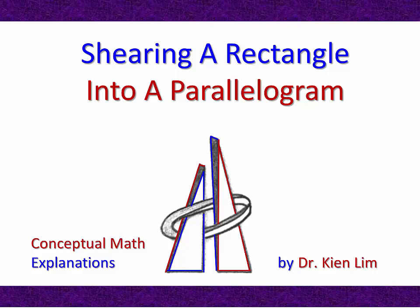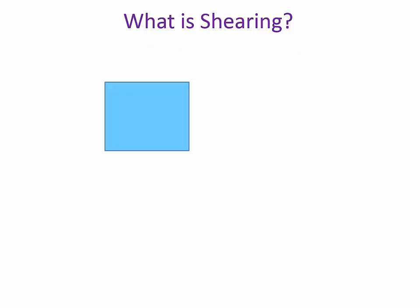In this video, I will explain what shearing a 2D object means using a rectangle as an example to illustrate. Shearing is a type of transformation where points on the 2D object are moved.